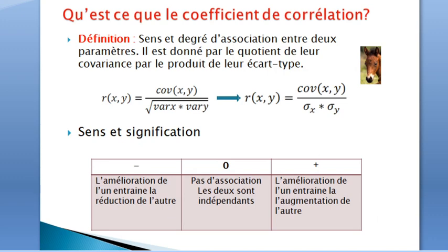Now, what about the coefficient of correlation? It is the measure and degree of association between two parameters, and it is given by the quotient of the covariance divided by the product of the standard deviations, using the formula we have presented.